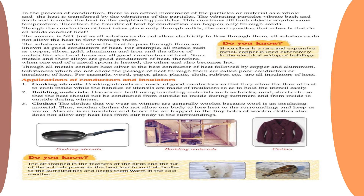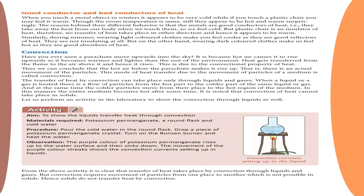Third, clothes worn in winter are generally woolen because wool is an insulating material. Woolen clothes do not allow body heat to escape to the surroundings. Air trapped in the tiny holes of woolen clothes also prevents heat loss. For example, during winter a metal object in a room feels very cold to touch, while a wooden object in the same room feels warmer, because metal conducts heat away from your hand quickly, while wood does not.